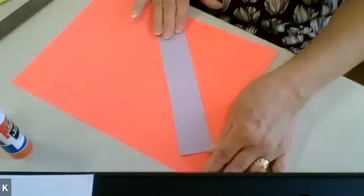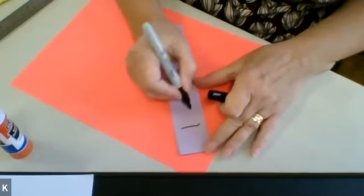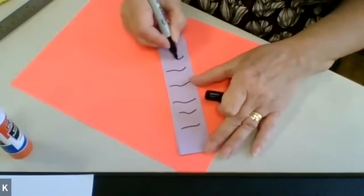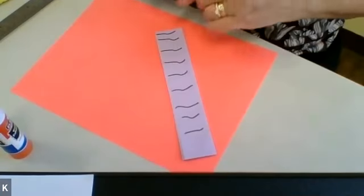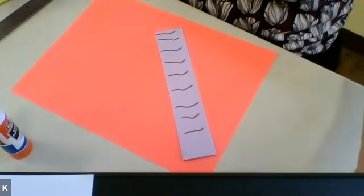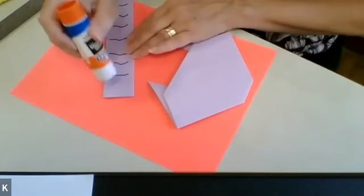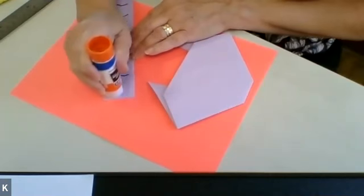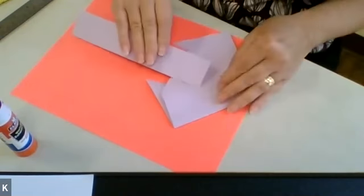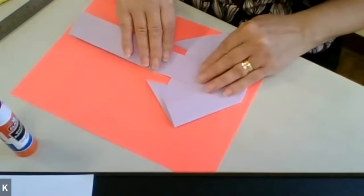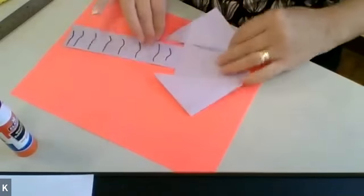Mine's a little uneven. Then you're going to take a marker and you're going to make some lines so it looks like an elephant trunk. Then you're going to take some glue again, and up on top you're going to glue it about like that, right in the middle.